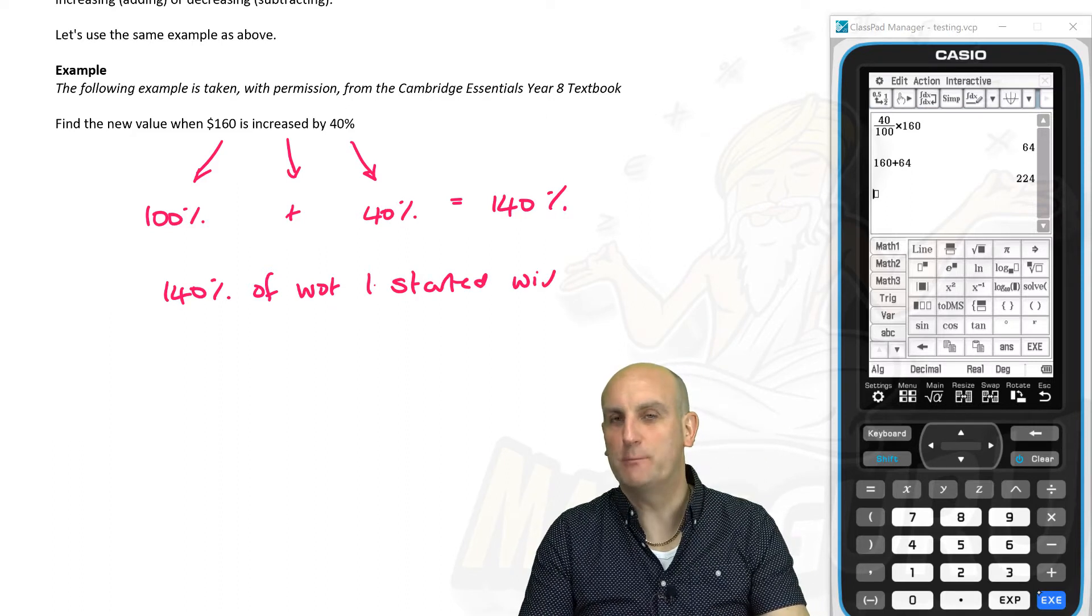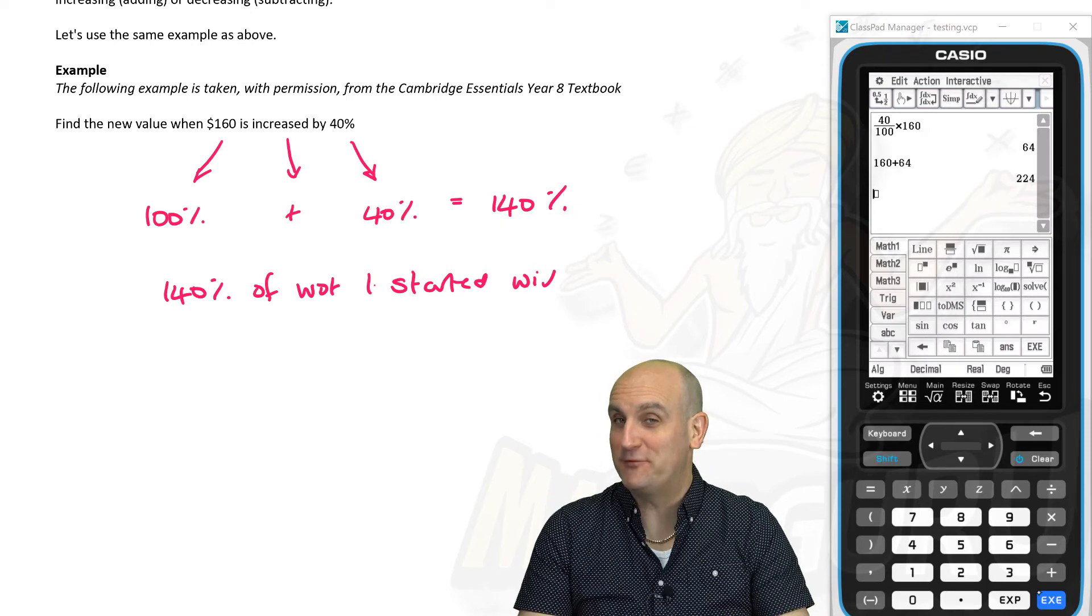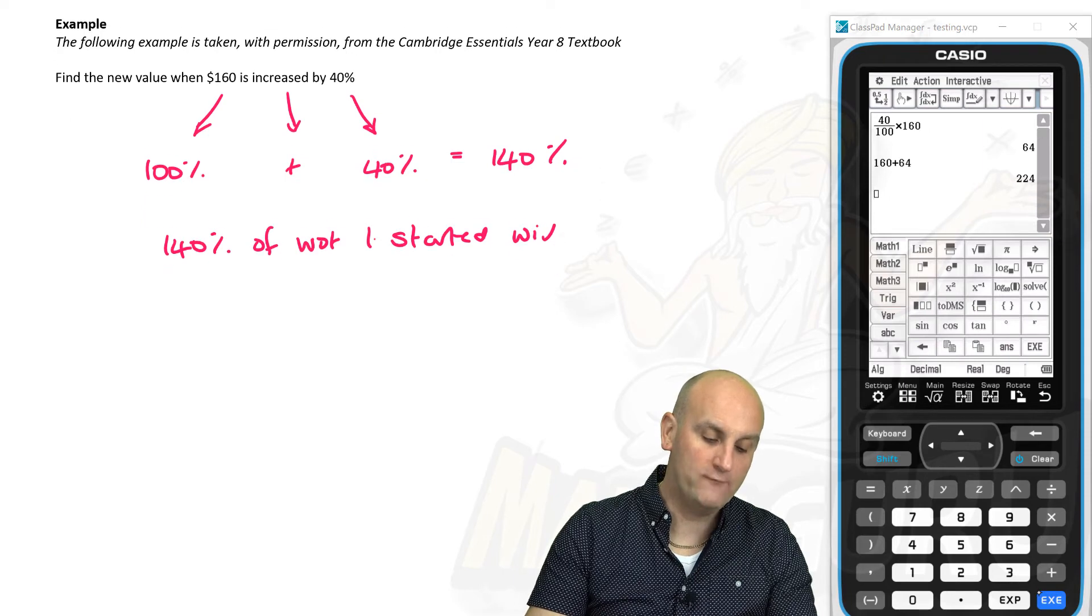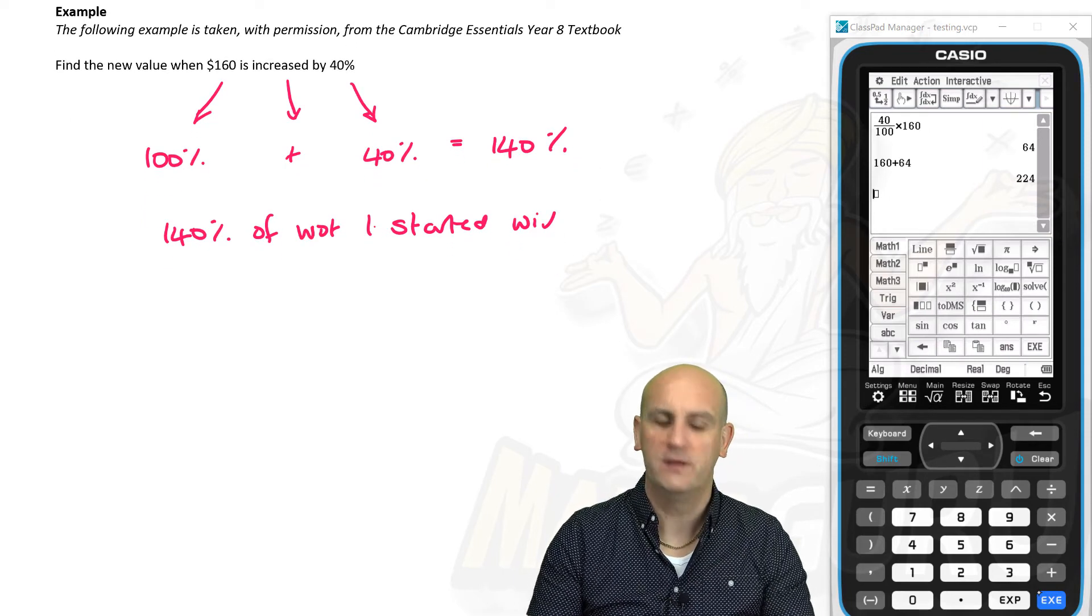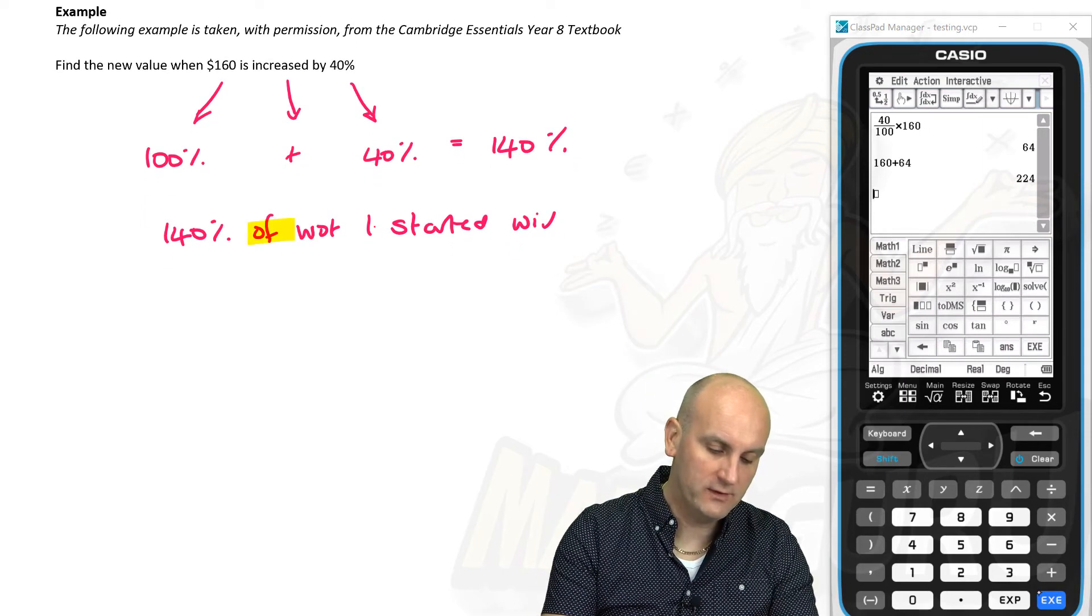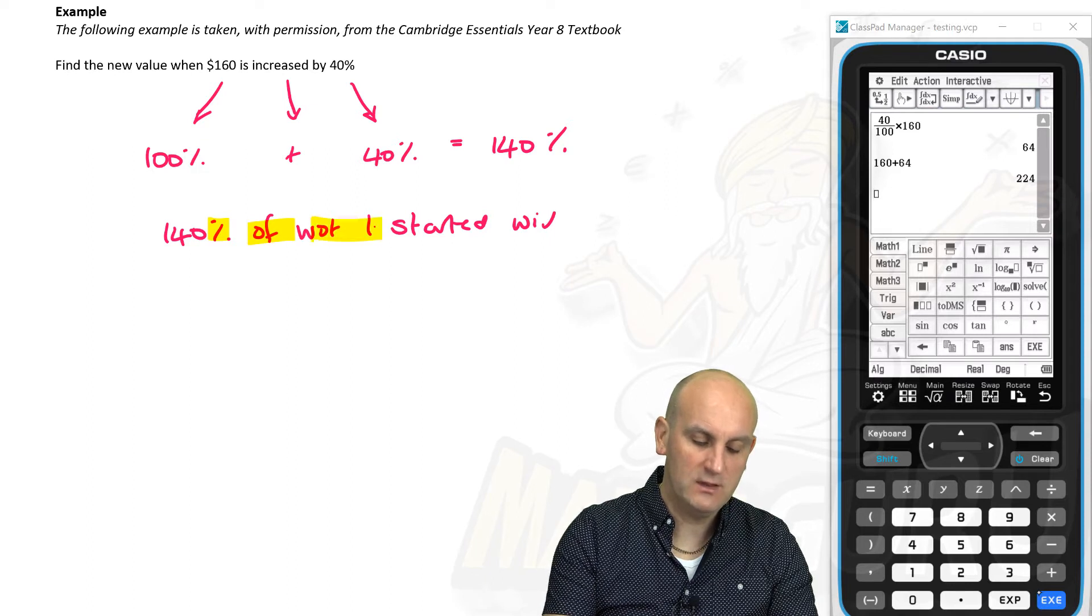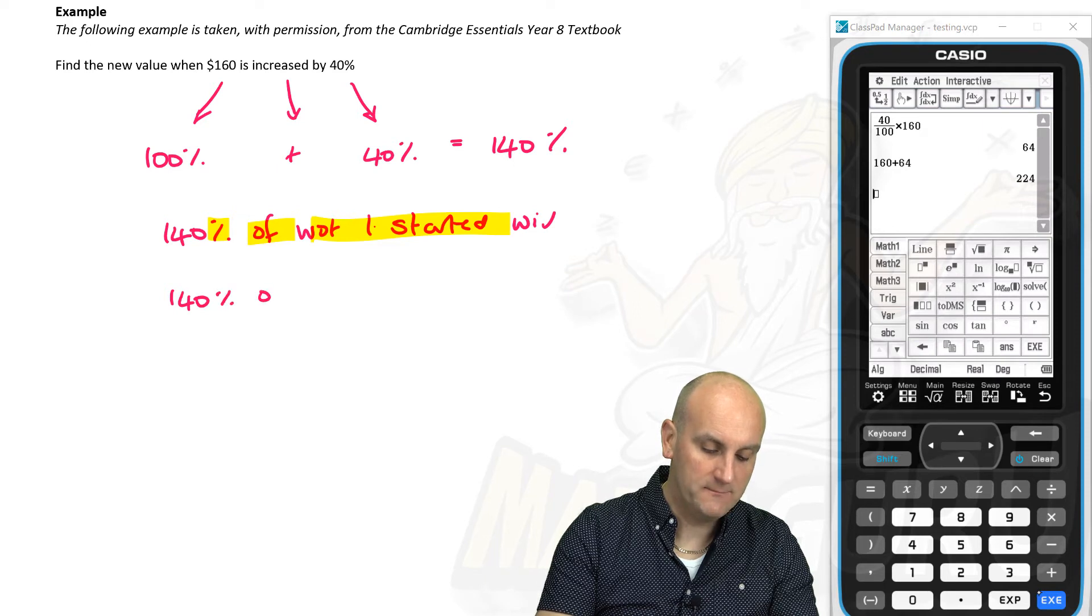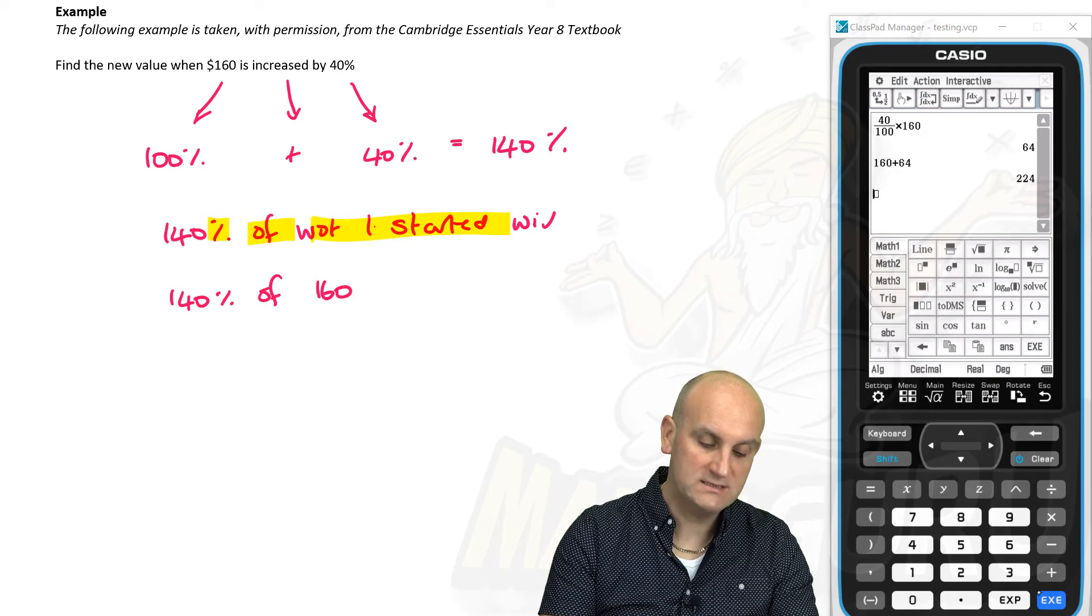That gives me 140% of what I started with. 140% of what I started with. English, not my strong point. Do I care? No, I'm the maths guru. Let the English guru sort this one out. So 140% of what I started with. Hold on a moment. Of. I know in mathematics what of becomes. I know what a percentage sign becomes. And I know what I started with.